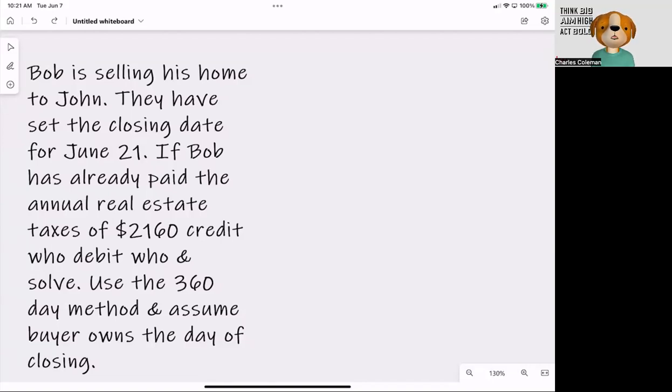So the question reads, Bob is selling his home to John. They have set the closing date for June 21st. If Bob has already paid the annual real estate taxes of $2,160, credit who, debit who, and solve. Use the 360-day method and assume the buyer owns the day of closing.